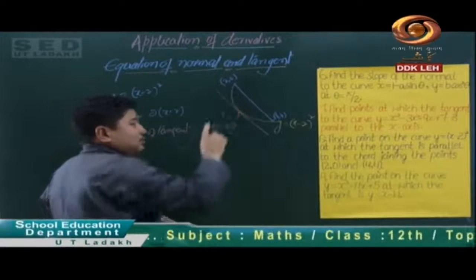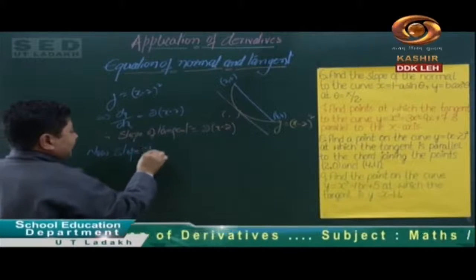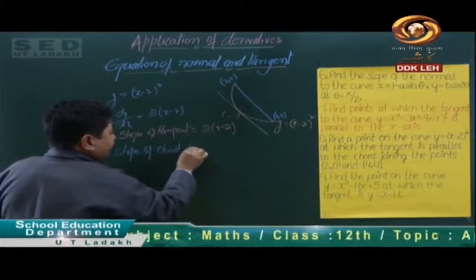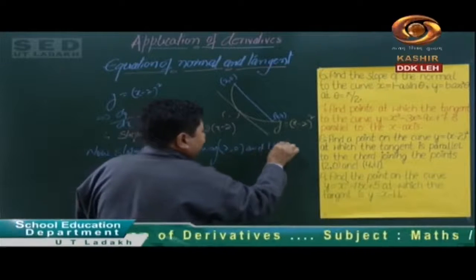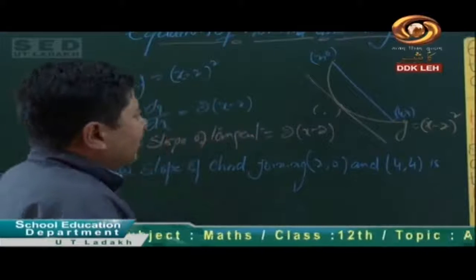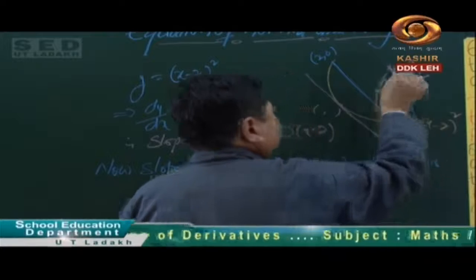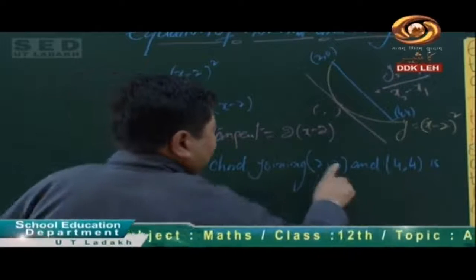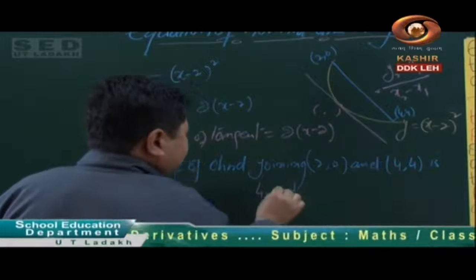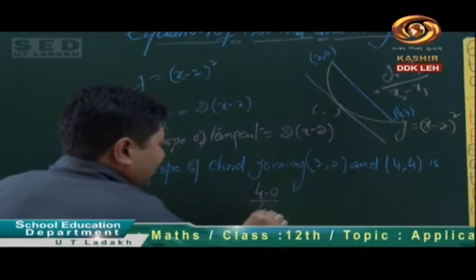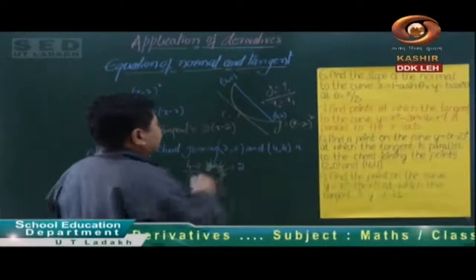Now we are going to find the slope of the chord joining the two points (2,0) and (4,4). The formula is y2 minus y1 divided by x2 minus x1. So slope of chord equals (4 minus 0) upon (4 minus 2), that means 4 upon 2 is equal to 2. The slope of the chord is 2.